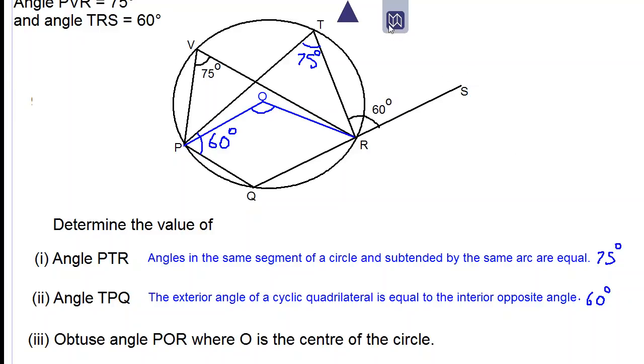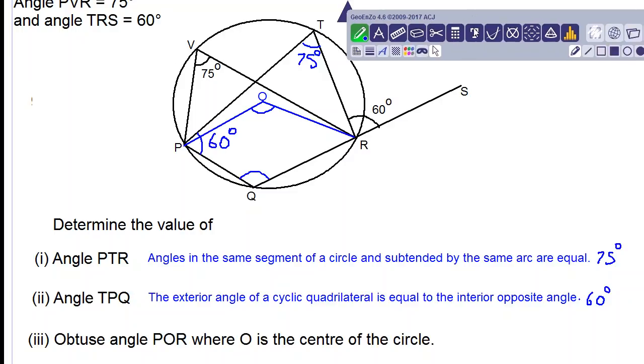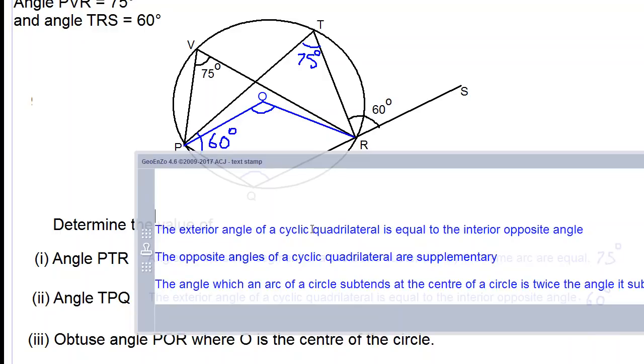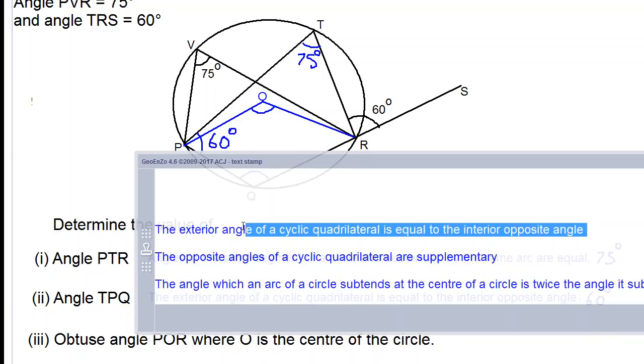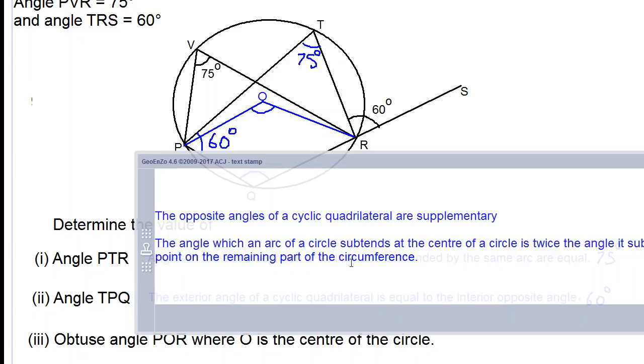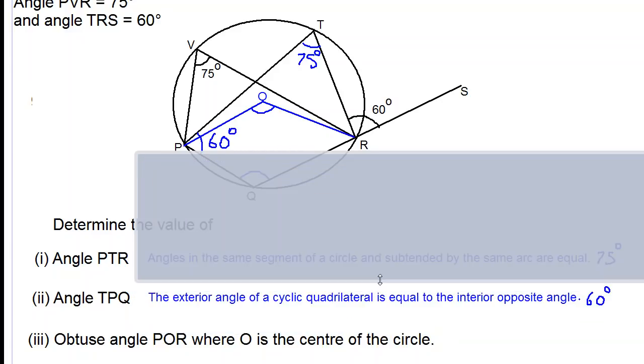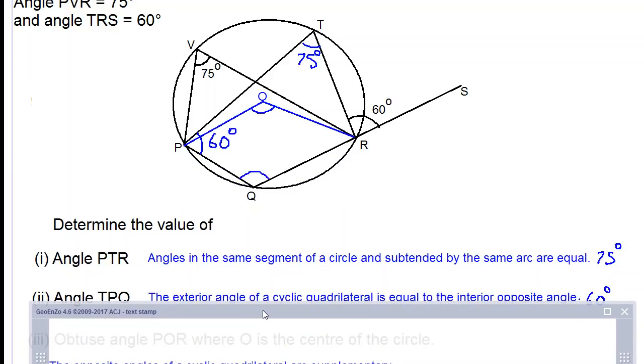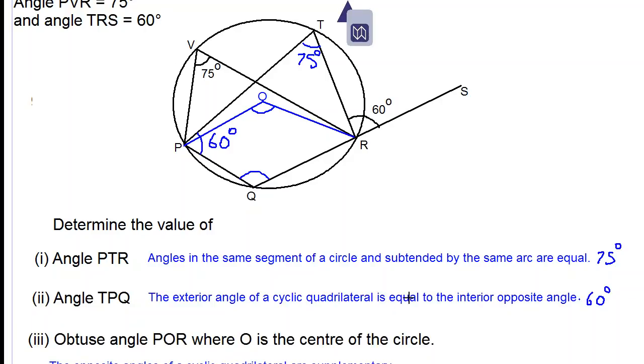So what we are going to do is we are going to use a theorem to work out angle Q. We're going to use a circle theorem: the opposite angles of a cyclic quadrilateral are supplementary. This is one theorem that we will use.